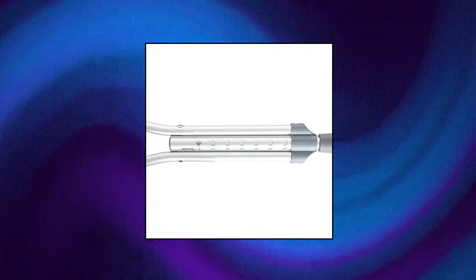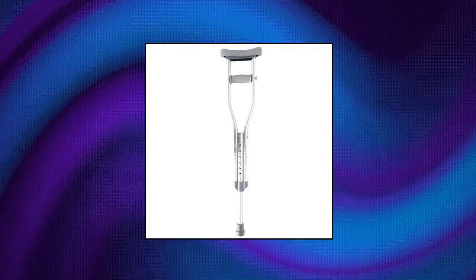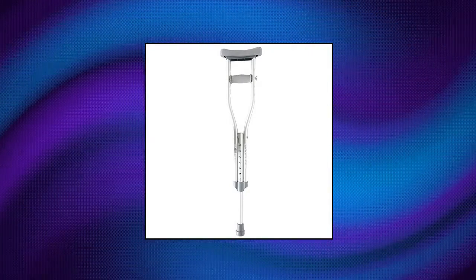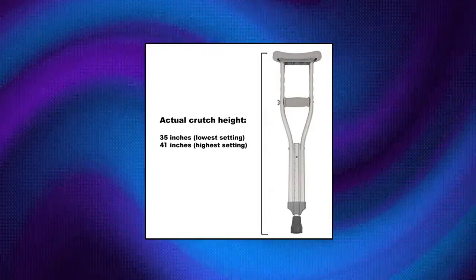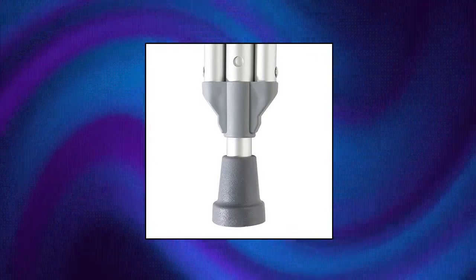PCP aluminum crutches. Child user height: 4 feet 0 inches to 4 feet 6 inches. Crutch height 35-41. Printed height scale eliminates guesswork when sizing. Quick and easy single button height adjustment in one inch increments. Completely pre-assembled including tips, hand grips, underarm pads and usage instruction.